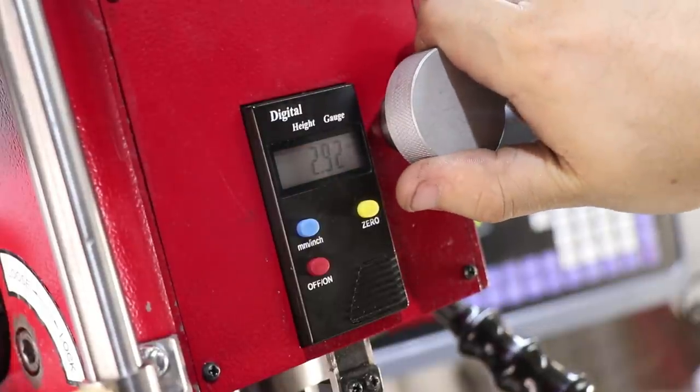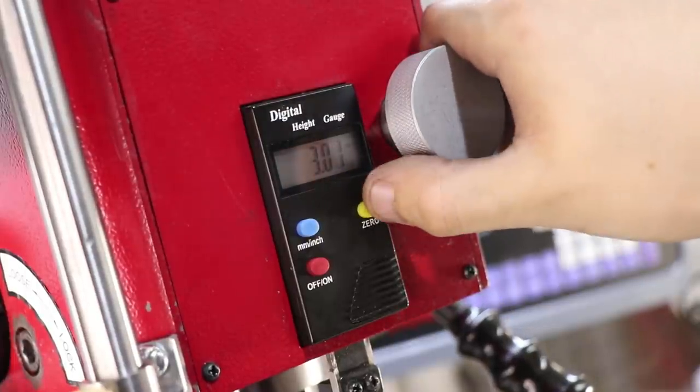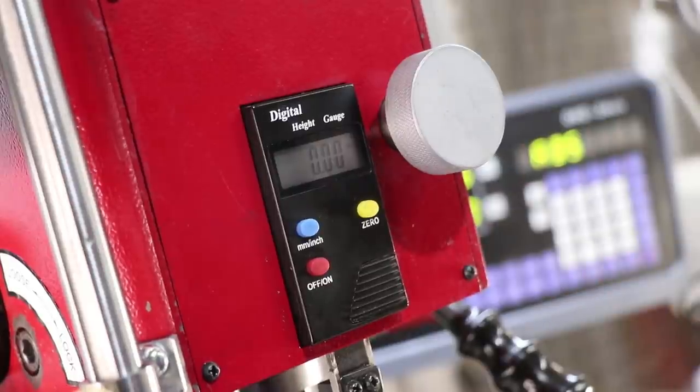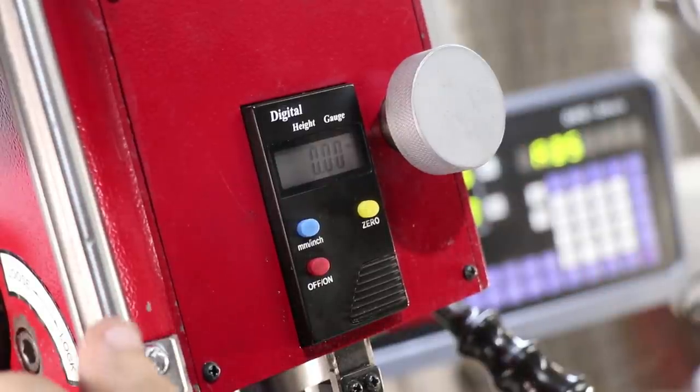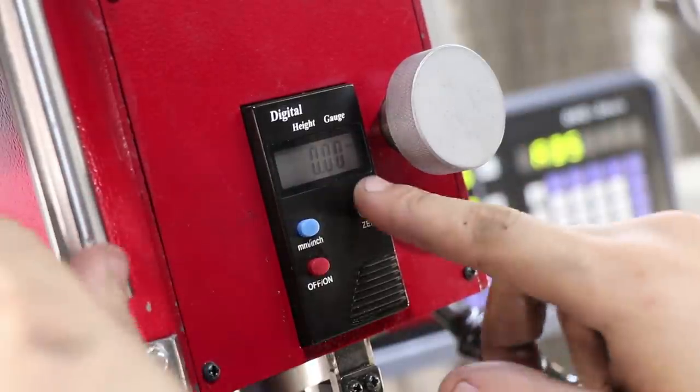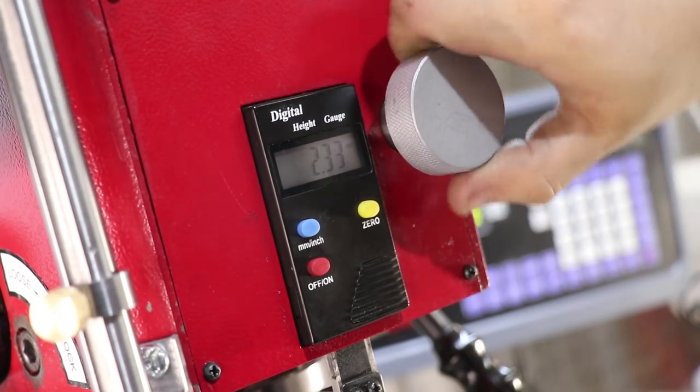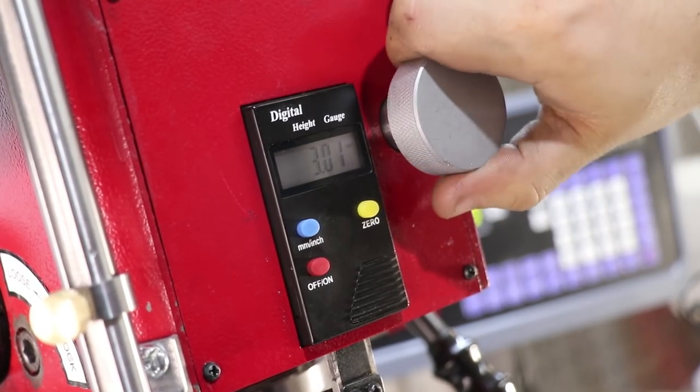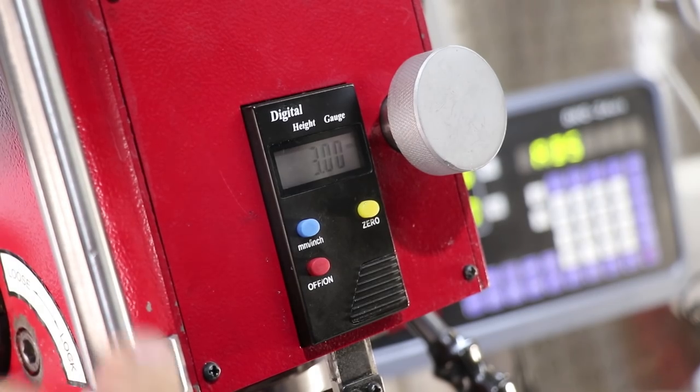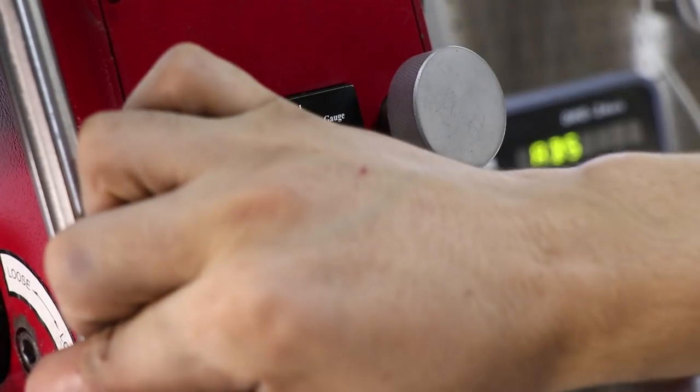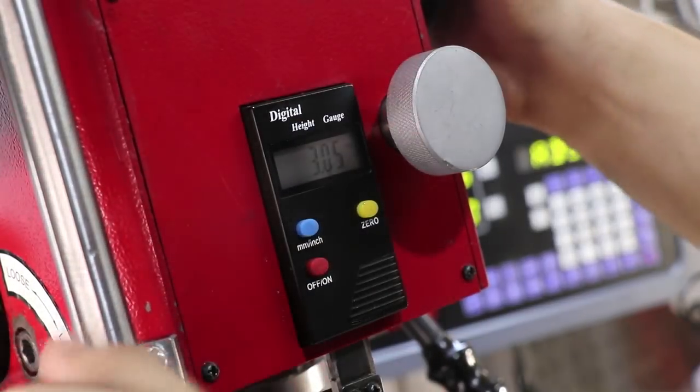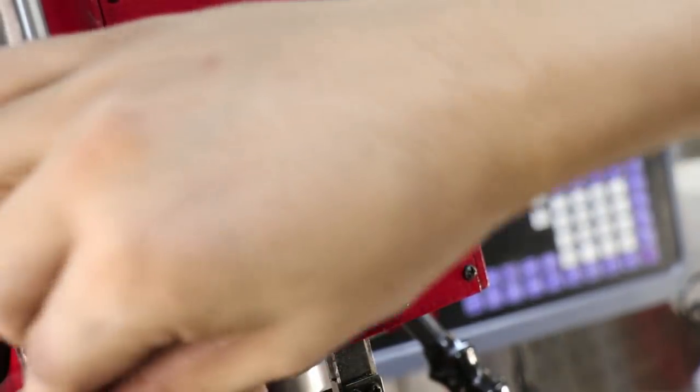The final thing left to mention is this depth stop is repeatable to only about 0.1 or 0.15mm, which in my opinion is quite good for a depth stop. Of course, there is a bit of flex in the assembly, but I think 0.15mm is perfectly acceptable for a depth stop like this. Anything more precise and you'd probably want to use the fine feed to get the hole perfectly to size.